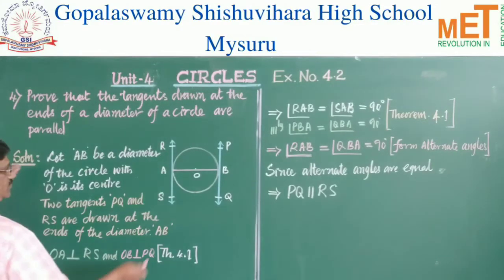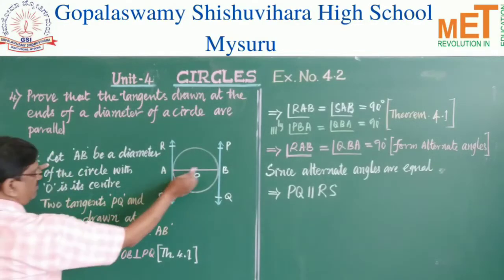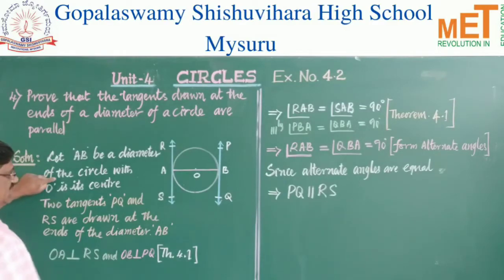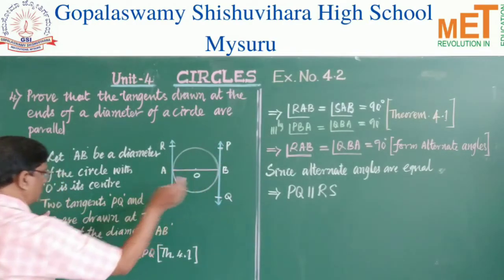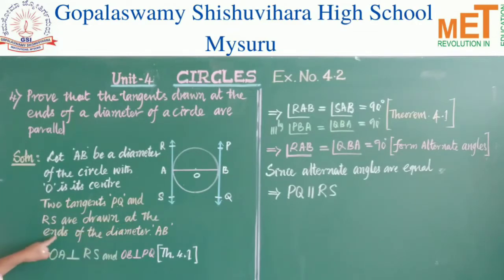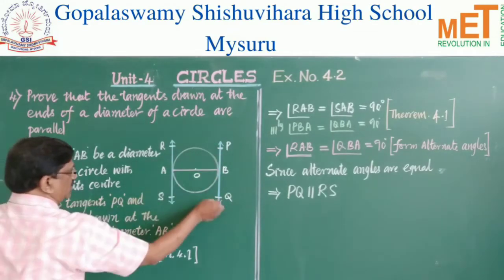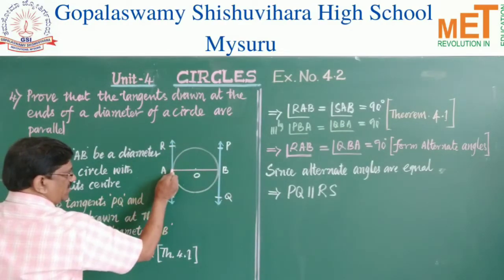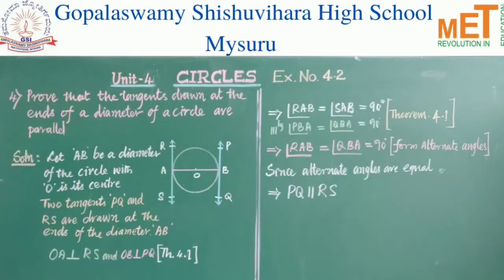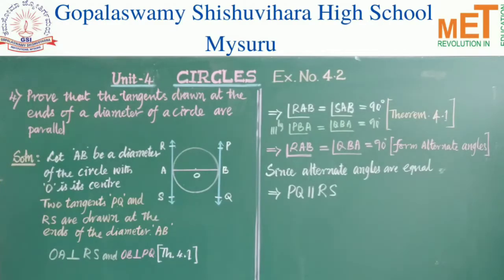Let AB be the diameter of the circle with center O. Two tangents PQ and RS are drawn at the end points of the diameter AB. What we have to show is that PQ is parallel to RS.